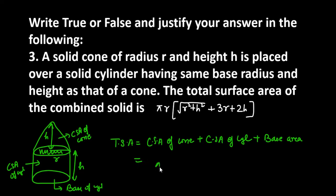We have CSA of cone as pi r L. Then, we have CSA of cylinder. CSA of cylinder is 2 pi r h. Then, we have base area. Base area is pi r square.